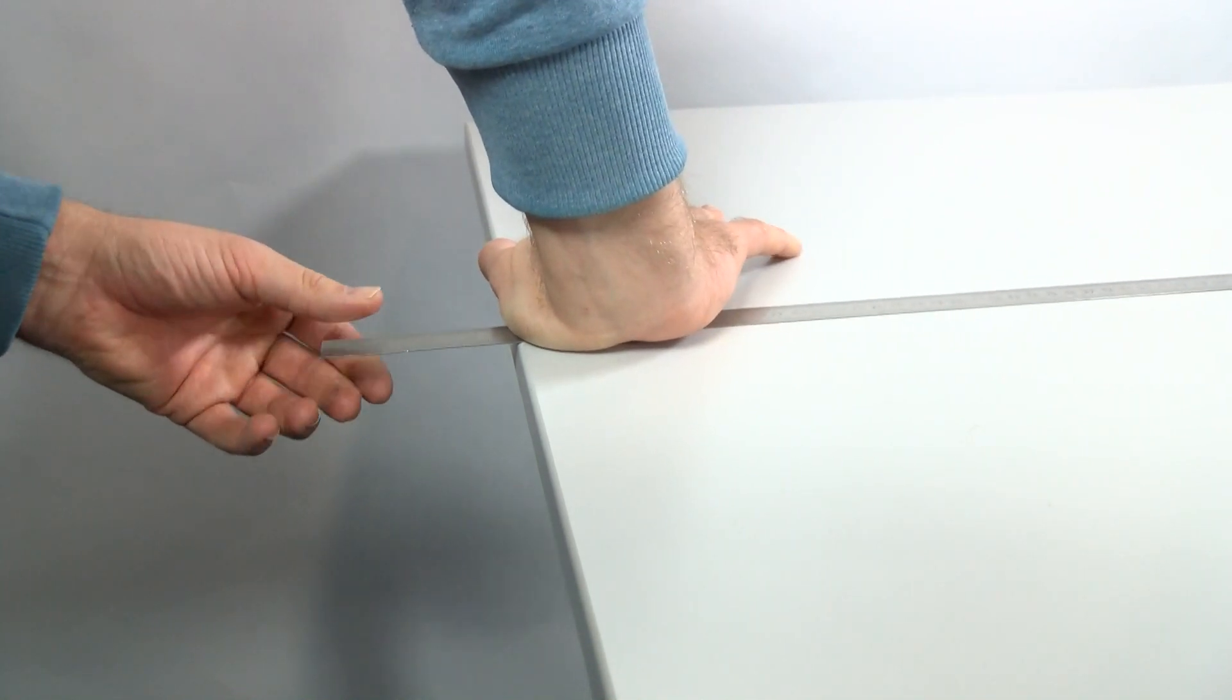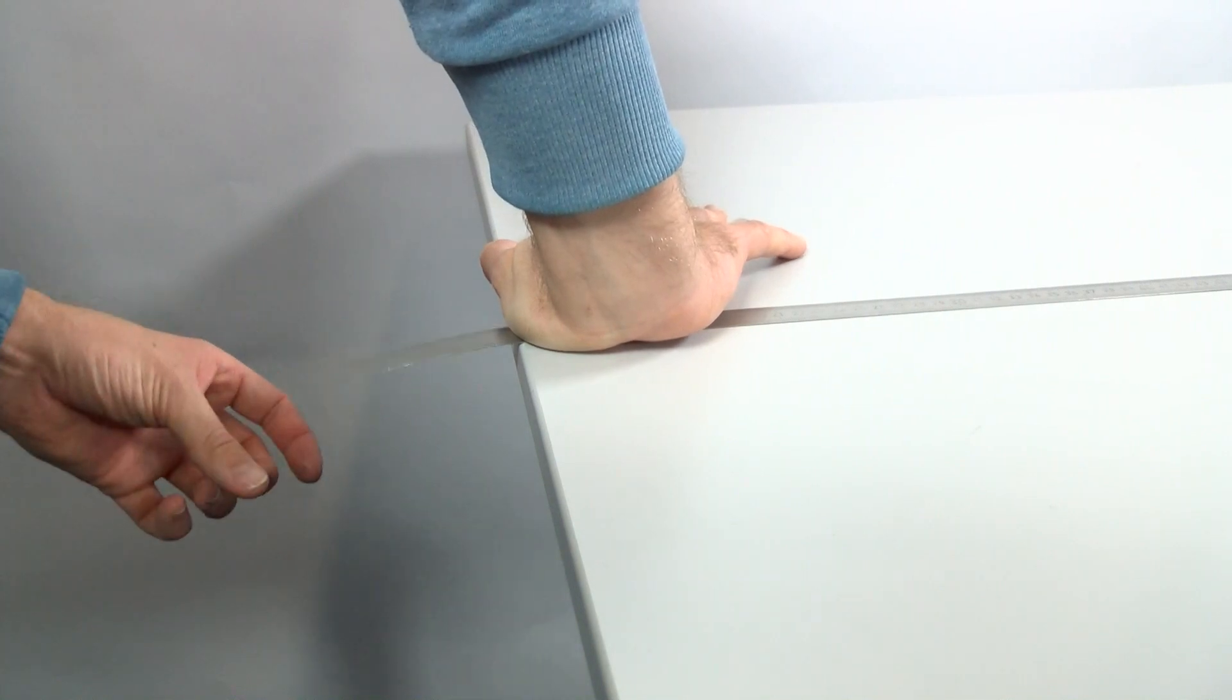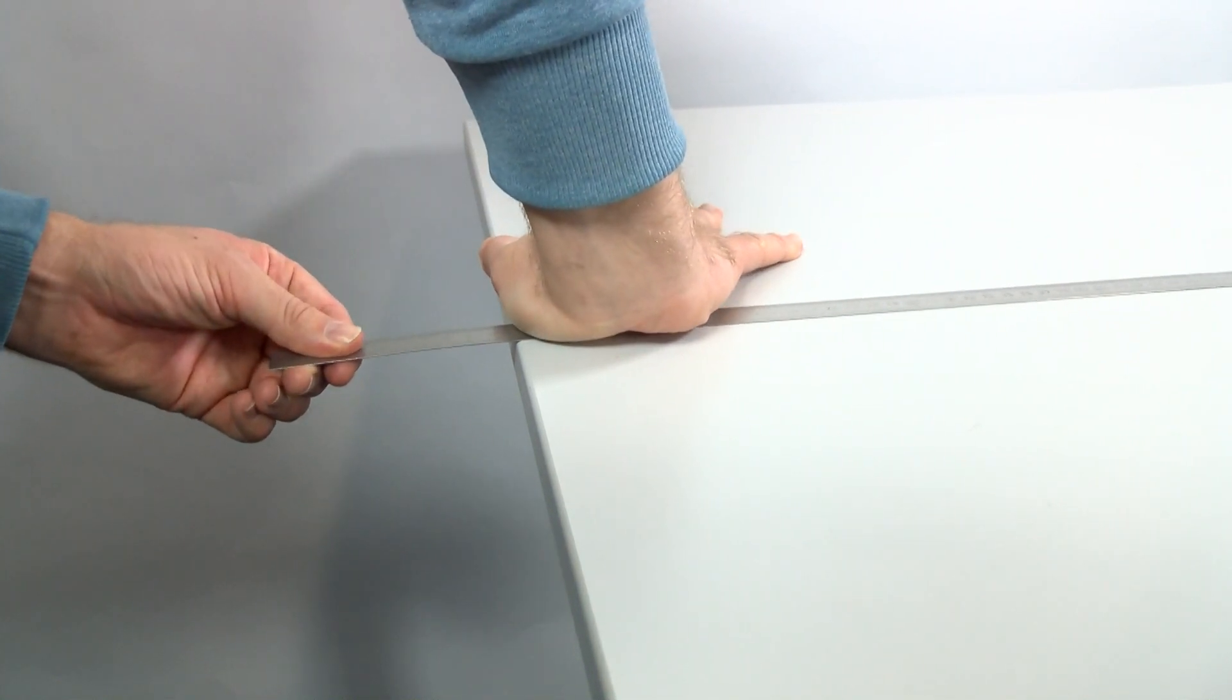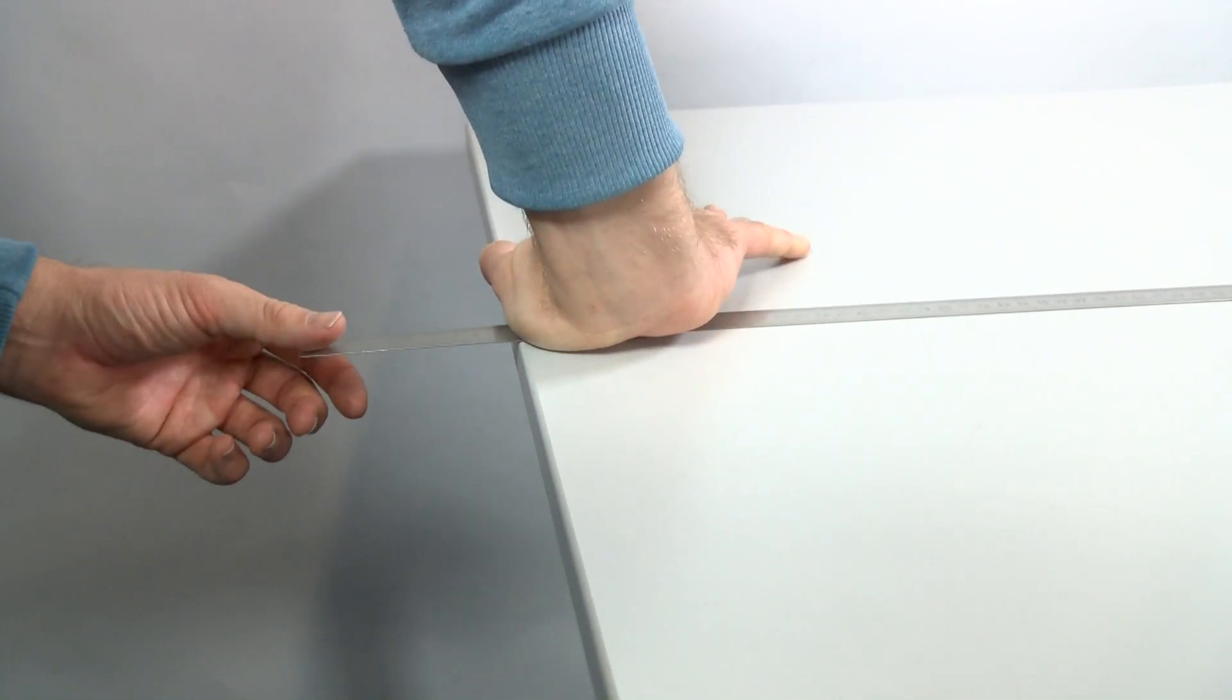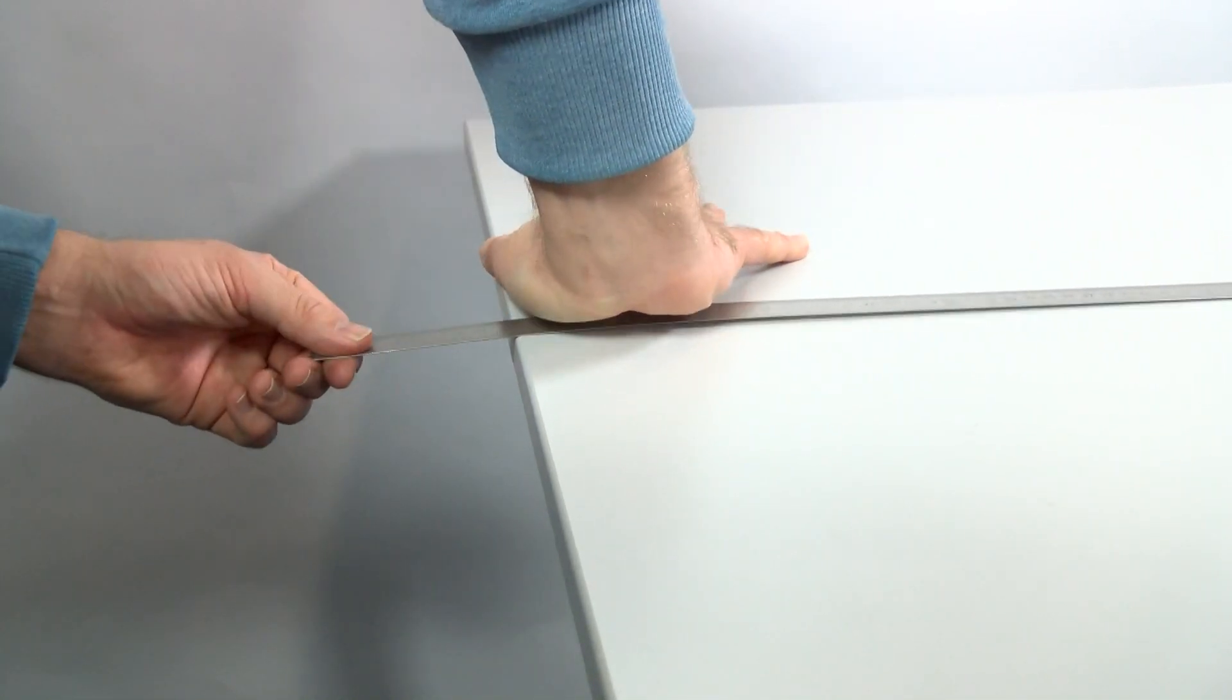Press firmly with one hand on the ruler at the level of the table edge and make the free end swing with the other hand. To create different high sounds you only need to change the length of the overhang.